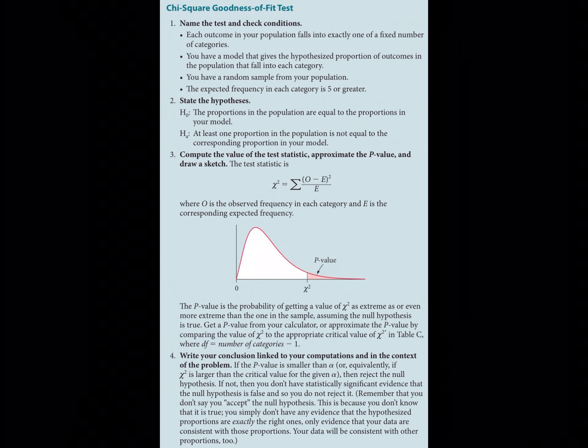A goodness of fit test is used when there are more than two outcomes. If there are only two outcomes, run a proportion test instead. For conditions: all outcomes must fall into one and only one group — no overlapping categories. You must be given a model telling you the expected distribution. For example, rolling a die means each outcome should occur one-sixth of the time. You still need a random sample, and all expected values must be at least five.